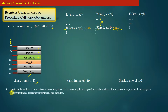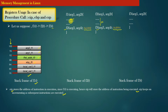EIP is the register which stores the address of the currently executing instruction. Since f1 is currently executing, EIP stores the address of the instruction being executed. EIP keeps incrementing as subsequent instructions are executed — so EIP stores the address of this instruction, then the next, and so on.